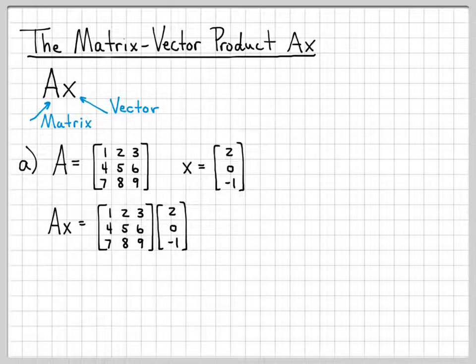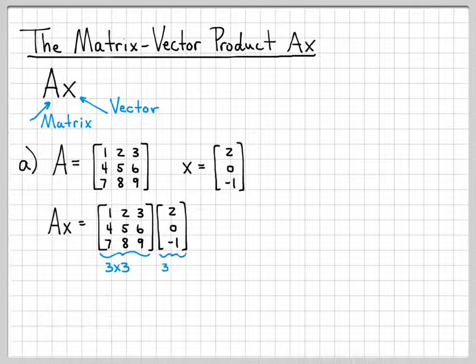One of the first things we need to do is ask ourselves, is this quantity Ax even well-defined? The way you can check that is by looking at the dimensions of the matrix and the dimensions of the vector. If we look at the matrix A, we see that A has three rows and three columns, so this is what we call a 3 by 3 matrix. Similarly, if we look at the vector X, it has three rows and one column, so this is a 3 by 1 vector. For the quantity Ax to be defined, these interior dimensions need to match. Those always have to match.